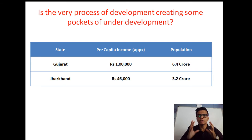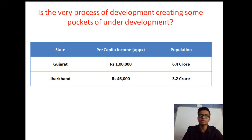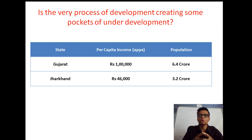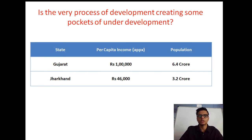Even within states, you find pockets of underdevelopment. Take Maharashtra — it is a fairly developed state, yet various regions within it are struggling to develop. This is not inclusive growth. We want all regions and all states to grow at a robust rate along with the country.